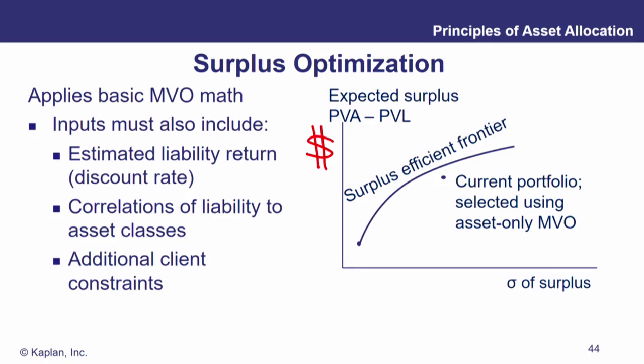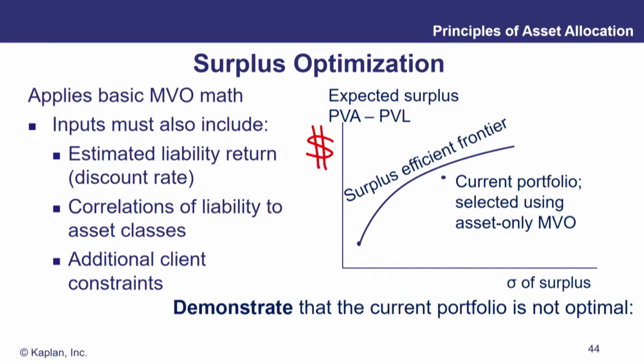The current portfolio is represented by a dot. The question is: can we demonstrate that the current portfolio is not optimal? Since it's not sitting on the efficient frontier — the surplus efficient frontier — it is currently not optimal.